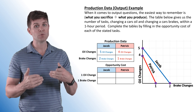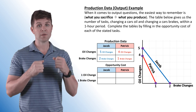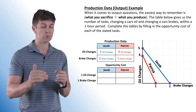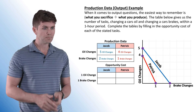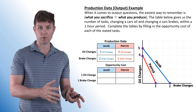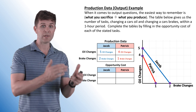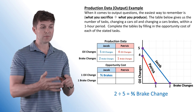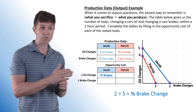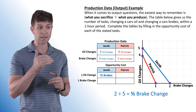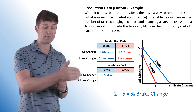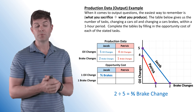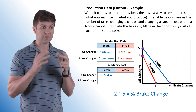We're able to plot them. When they give you the actual output — the production data — it's really easy to plot these. It's a little more difficult when they're giving you resources to produce. Now what we need to do is get the opportunity cost. To do this: sacrifice divided by what you produce. We want to find the opportunity cost of an oil change, so we divide the two brake changes by the five oil changes — what we're sacrificing divided by what we're producing — and we get two-fifths of a brake change.